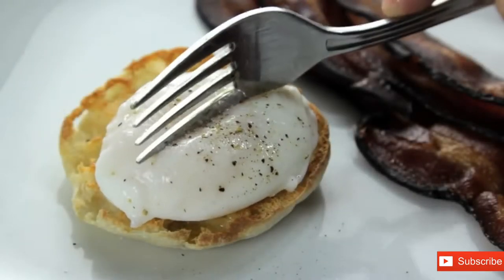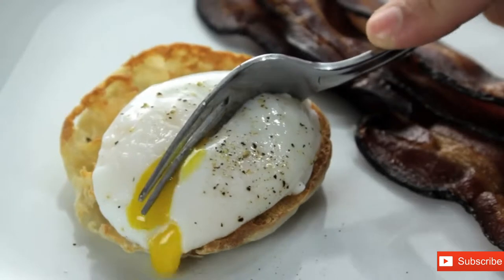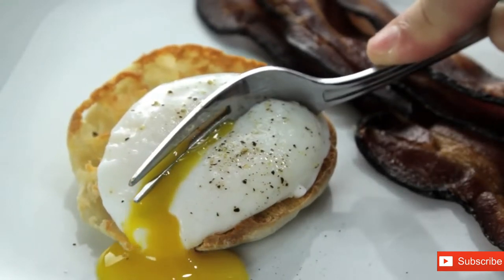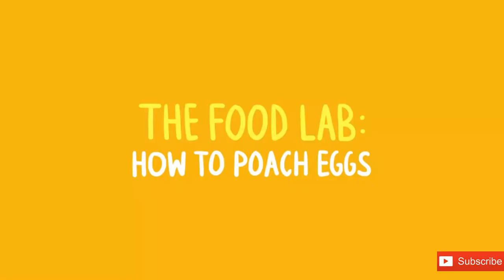The perfect poached egg: tender whites around a warm liquid yolk that oozes out like gold when you cut into it. They're an essential part of Eggs Benedict, they can turn any salad into a meal or any vegetable into brunch.